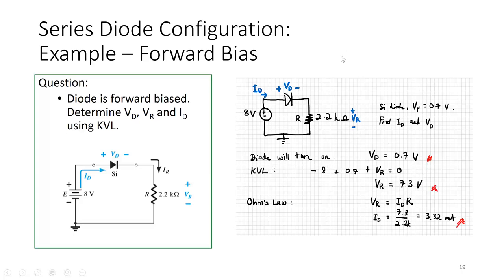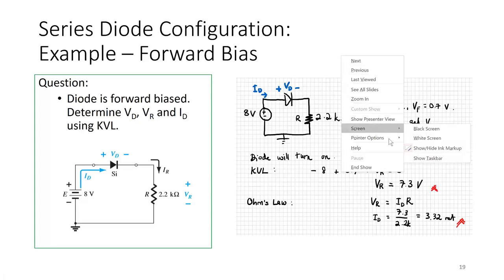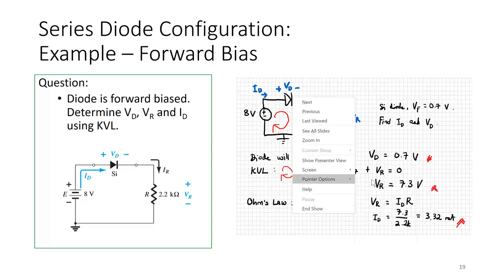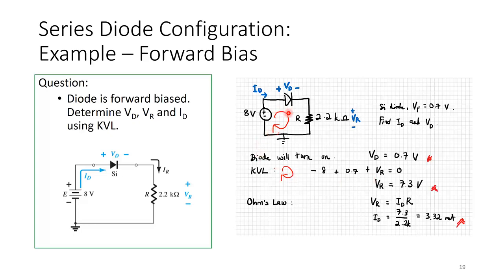Now I'm ready to do KVL. Doing a loop here, KVL gives us: minus 8 plus 0.7 plus VR equals 0. Therefore VR equals 7.3 volts.